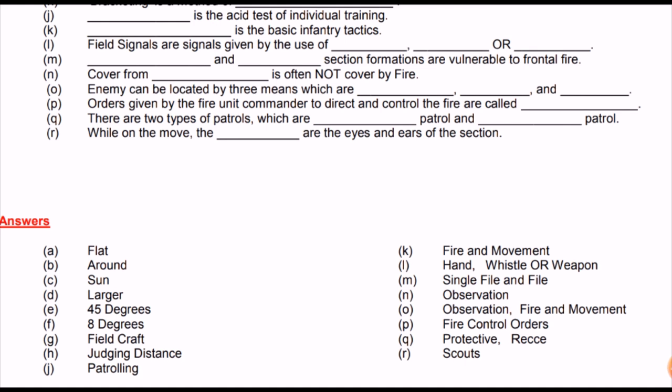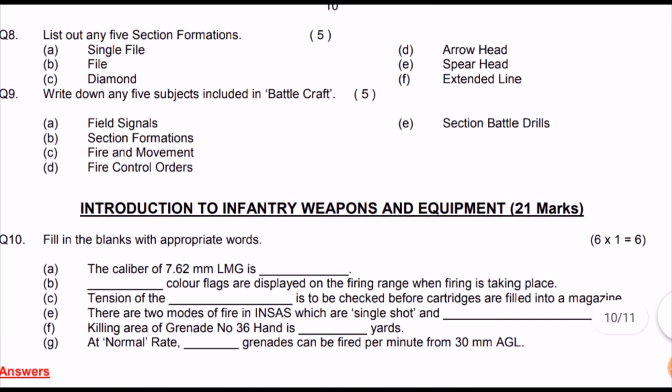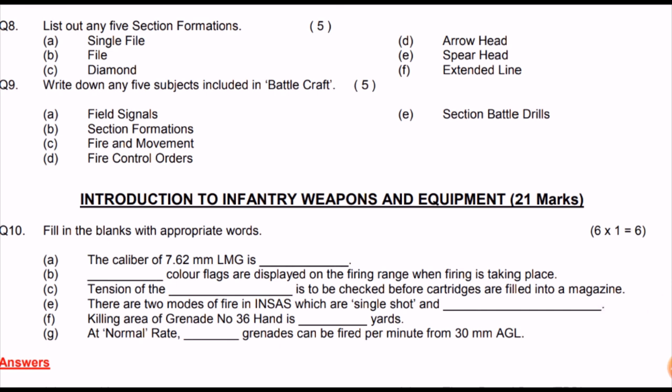There are two types of patrols: protective patrol and recce patrol. While on the move, the scouts are the eyes and ears of the section. Any five section formations: single file, file, diamond head, arrowhead, spearhead, and extended line. Five subjects of battlecraft: field signals, section formation, fire and movement, fire control orders, and section battle drills.